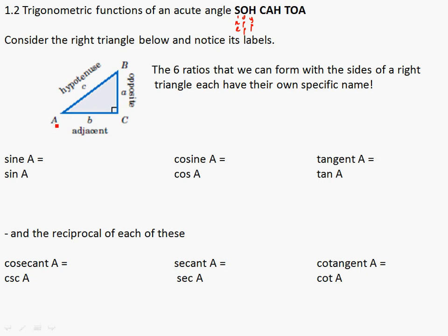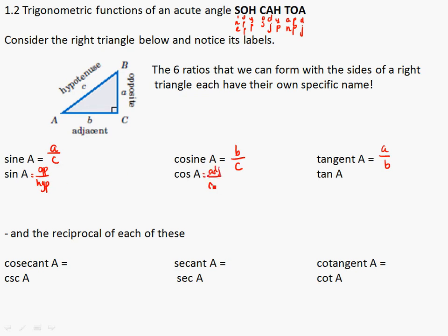Looking from angle A, the sine would be opposite over hypotenuse — that's A divided by C, so A over C in this triangle. The cosine: C stands for cosine, A for adjacent, so the adjacent side to A is B, and the hypotenuse is still C. The T stands for tangent, which is opposite divided by adjacent, so the tangent here is A over B. Sine is opposite over hypotenuse, cosine is adjacent over hypotenuse, and tangent is opposite over adjacent.